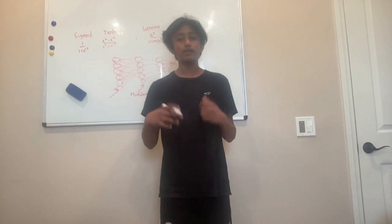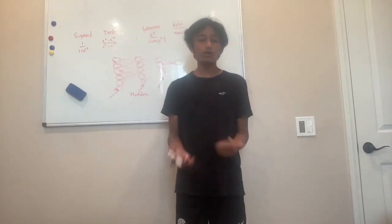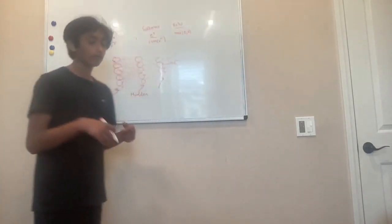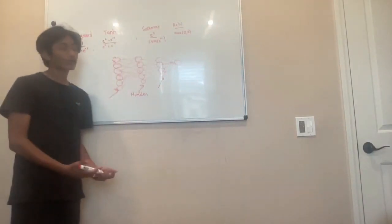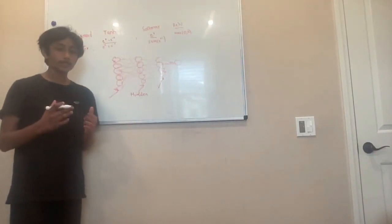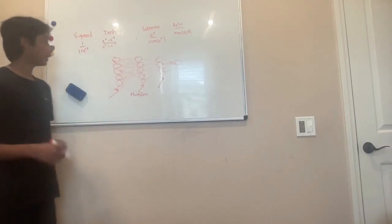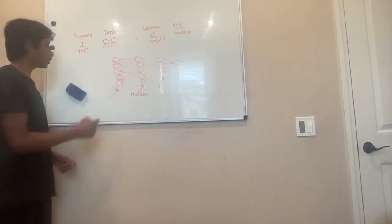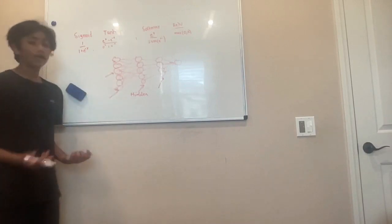So first of all, what is an activation function? Well, an activation function is just a mathematical function that determines the output of a neuron. In neural networks, we have a diagram like this — we have these different nodes in groups of layers, and these layers are connected in some sort of way. Each one of these nodes is what we call a neuron.